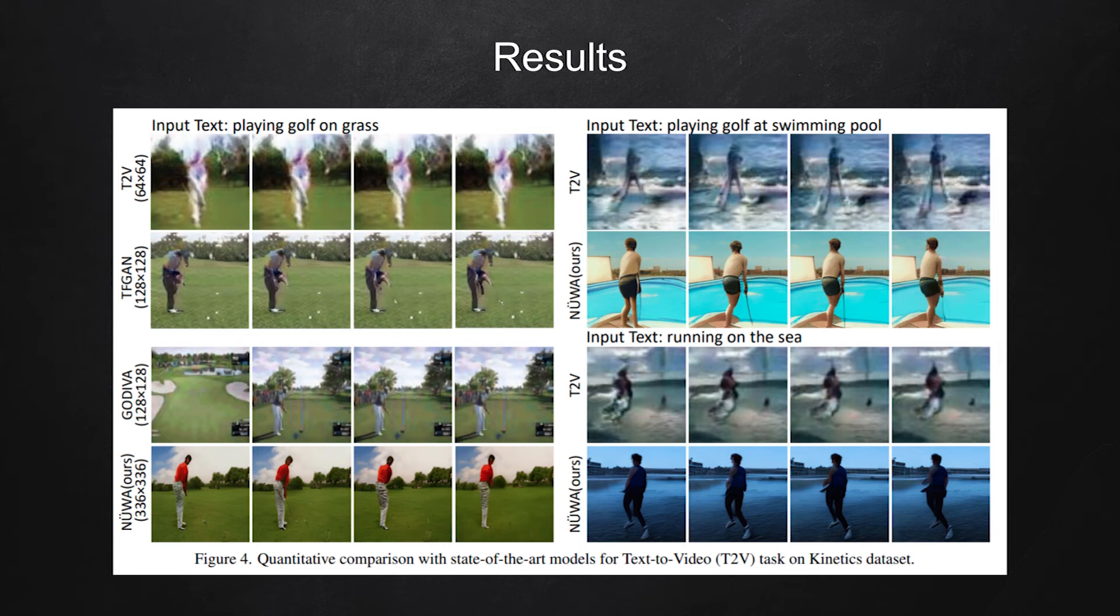On the left, input text is 'playing golf on grass.' If we see the outputs from other models, it has lots of artifacts. However, in the last row, we see the result of the NEWA model and the quality is a lot better. In other results, the amount of artifacts that the NEWA model creates is a lot less compared to other models.